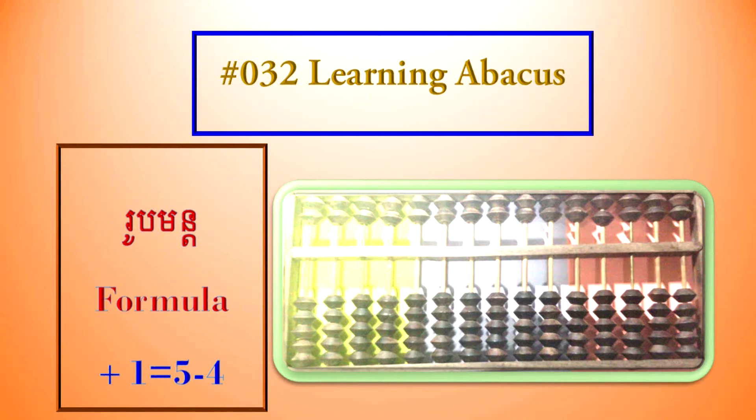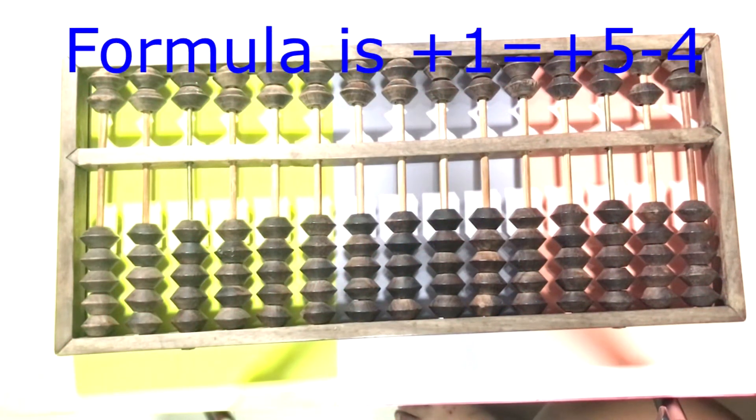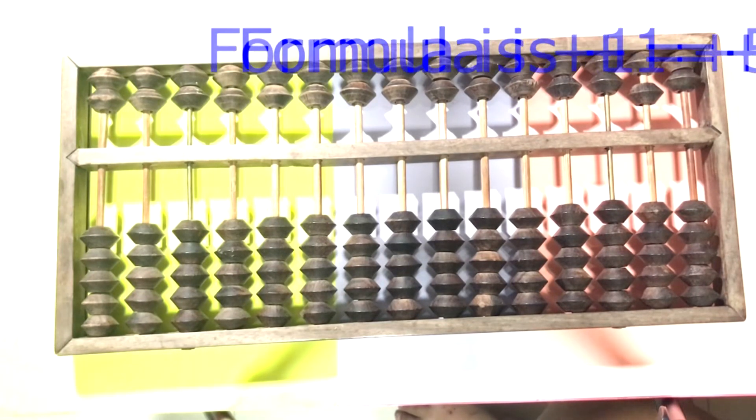Hello. Today we study about abacus lesson 32. The formula is plus 1 equals plus 5 and minus 4. We have 4 examples.